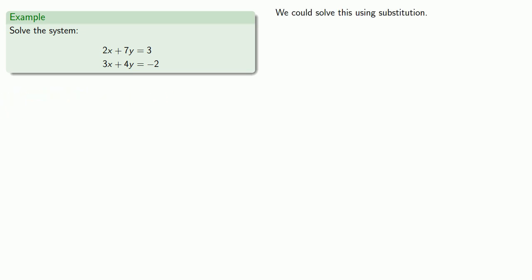We could solve this using substitution. First, we want to solve one of the equations for one of the variables. Let's pick the first equation, 2x + 7y = 3, and solve it for x.